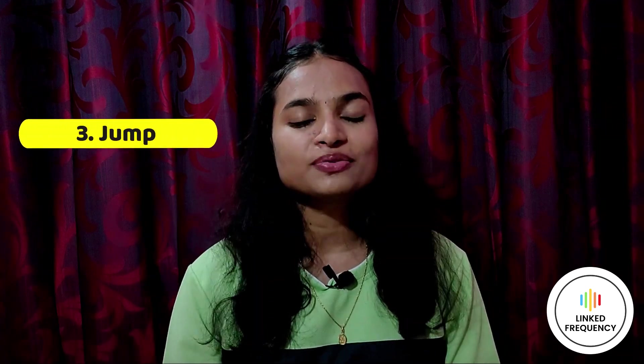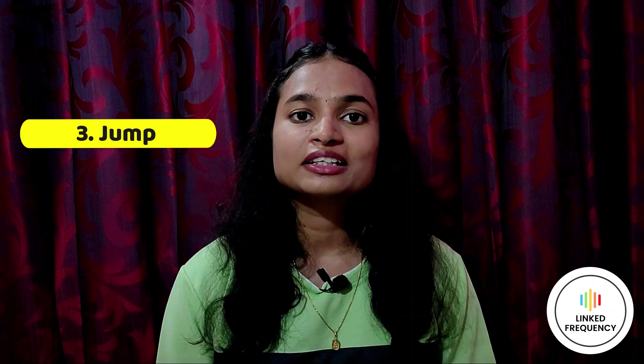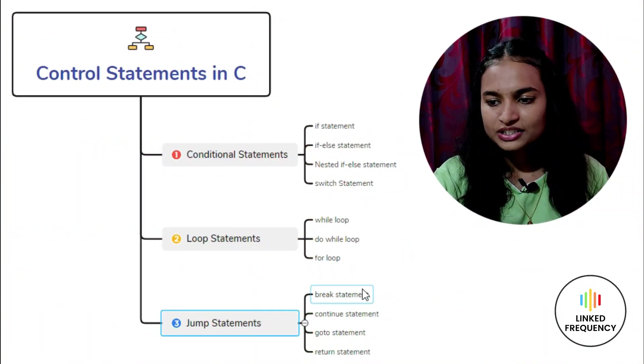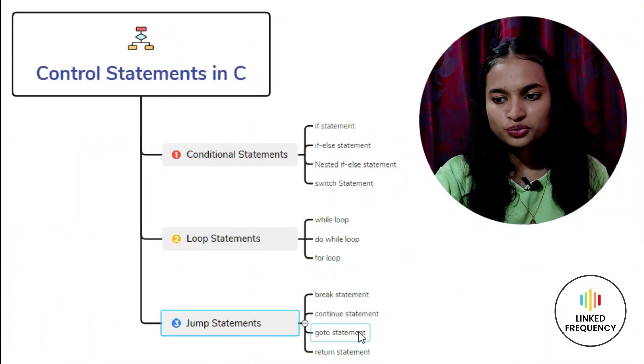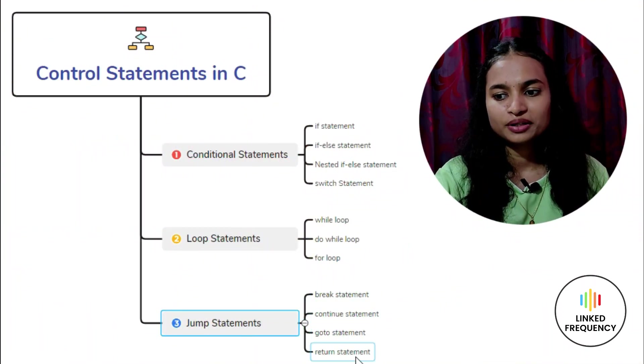Moving on to the next type: jump statements. Jump statements are control statements which interrupt the normal flow of the program. These are statements through which we can transfer control anywhere in the program. They are usually used to terminate loops or switch cases instantly. Jump statements include: break statement, continue statement, goto statement, and lastly the return statement.